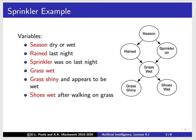Here's an example — an arguably causal network. The sprinkler being on depends on the season; whether it rains depends on the season; whether the grass is wet depends on whether it rained and whether the sprinkler is on. If the grass is shiny, then the grass is wet, and if the shoes are wet, the grass is wet. It's really just a belief network, but let's look at how viewing it as a causal network changes things.